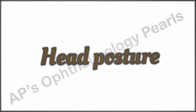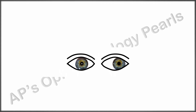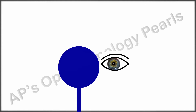After correcting any head posture, with the patient fixating on the target, first note the corneal light reflex — this will tell you whether there is a manifest squint or not. Now the cover part of the cover-uncover test is performed. If there is a manifest squint, the fixing eye is occluded and the non-occluded eye is observed; it will move to take up fixation. Not moving to take up fixation is rare and we will discuss this later.